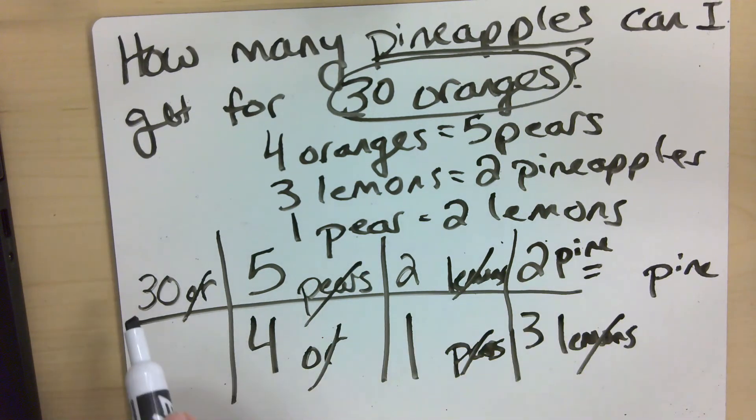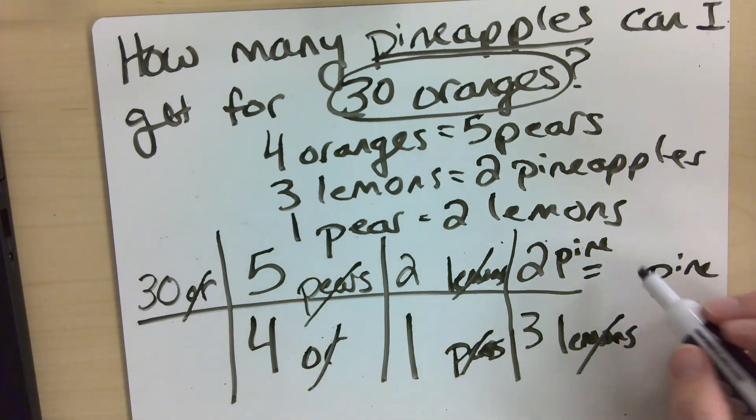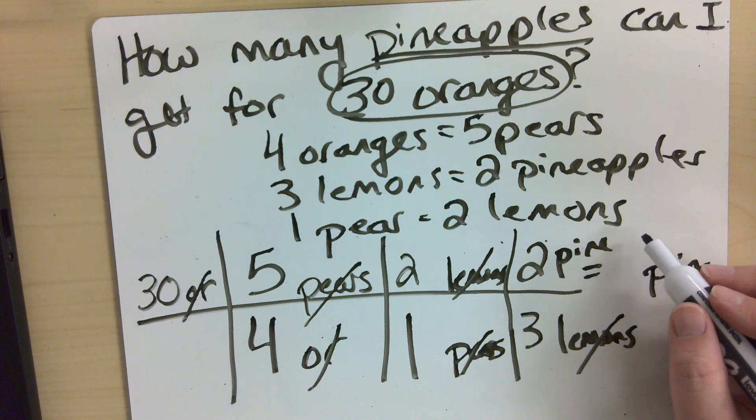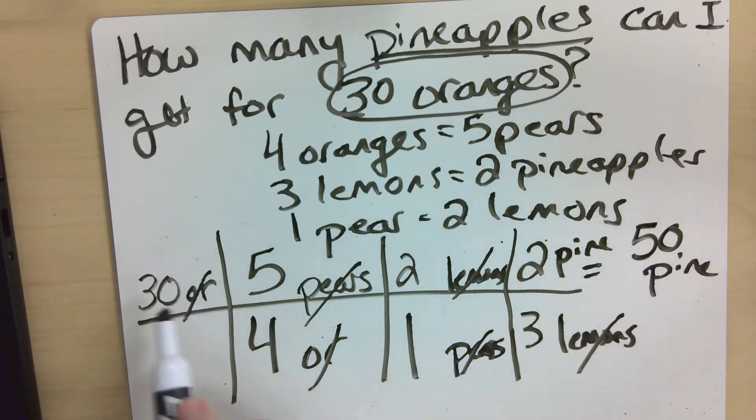So I'm left with pineapples. Then I'm going to multiply everything across the top. So that'll give me 600 divided by 12. So that should be 50 pineapples. 30 times 5 times 2 times 2 divided by 4 divided by 1 divided by 3.